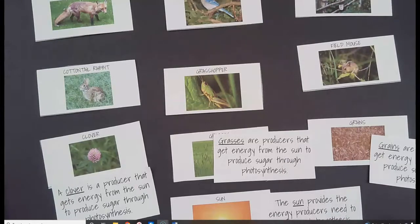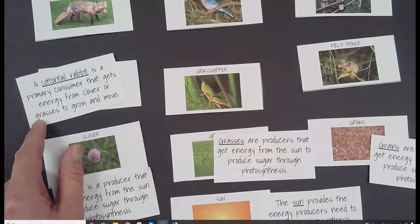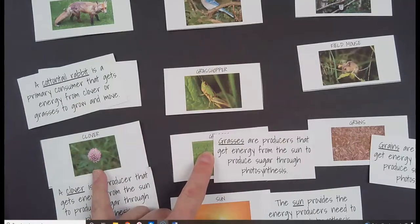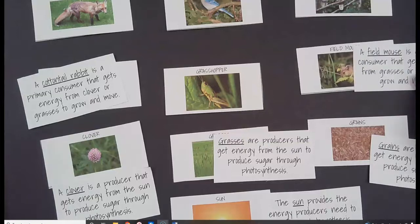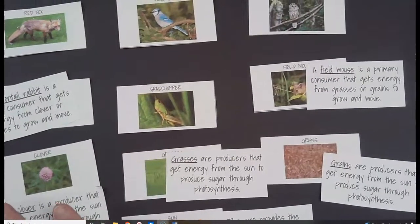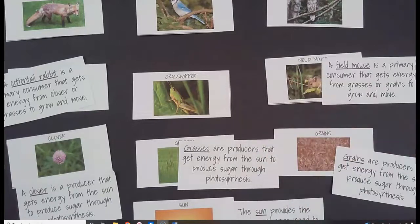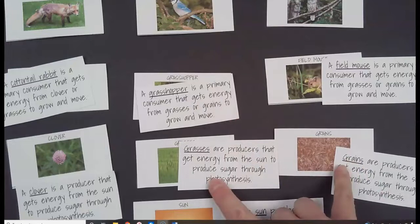Here's where the next layer starts to get tricky. The cottontail rabbit is a primary consumer that gets its energy from clover or grasses to grow and move. A field mouse is a primary consumer that gets its energy from grasses or grains. Grasses and grains would both go to the field mouse. The grasshopper is a primary consumer that gets energy from grasses or grains to move and grow.